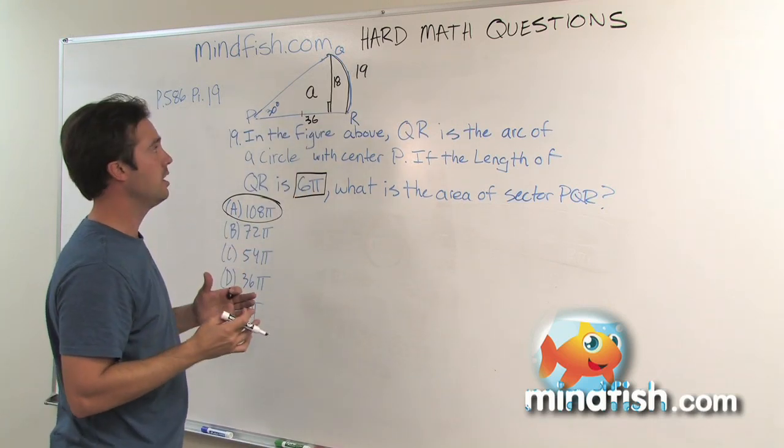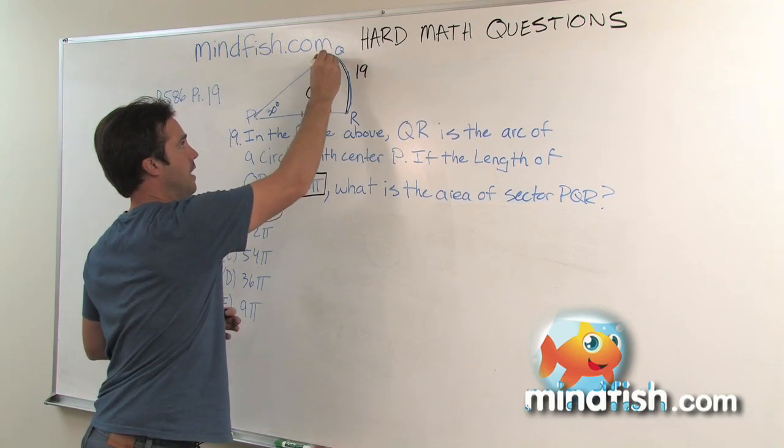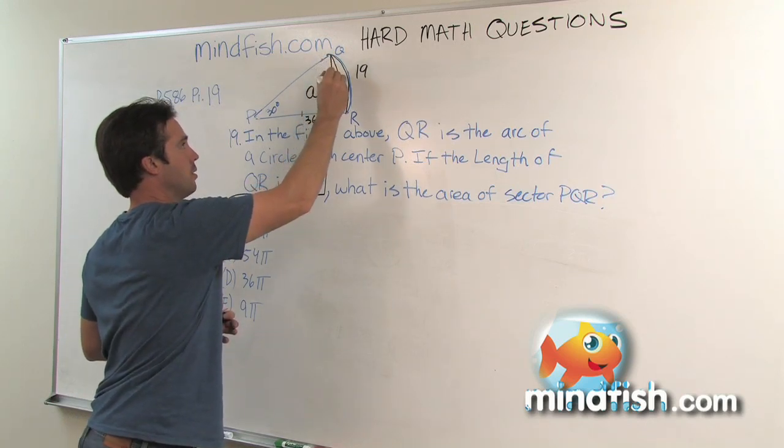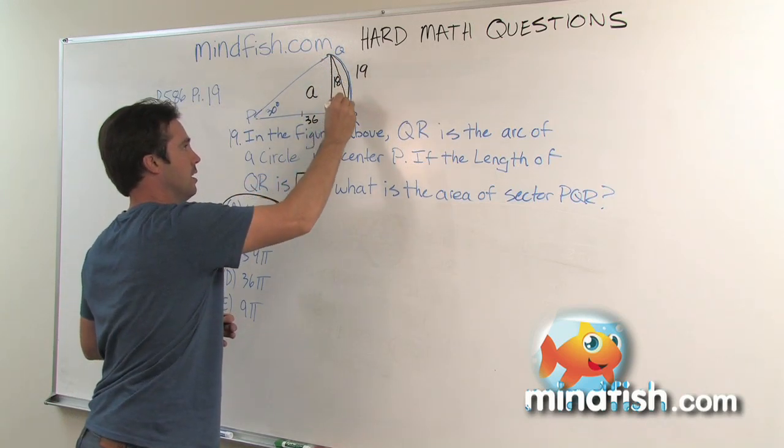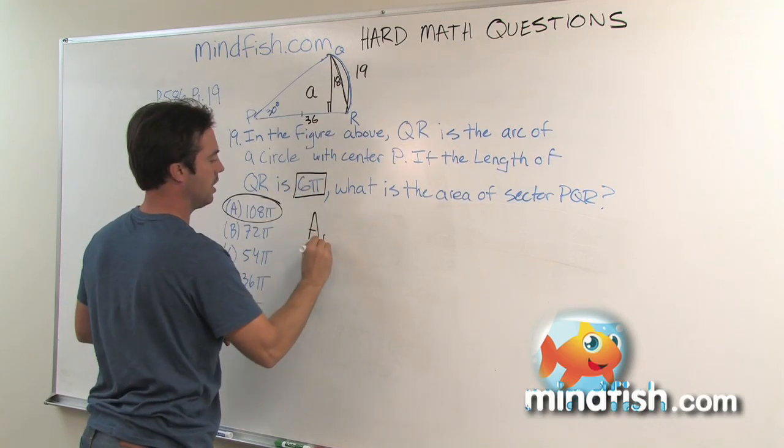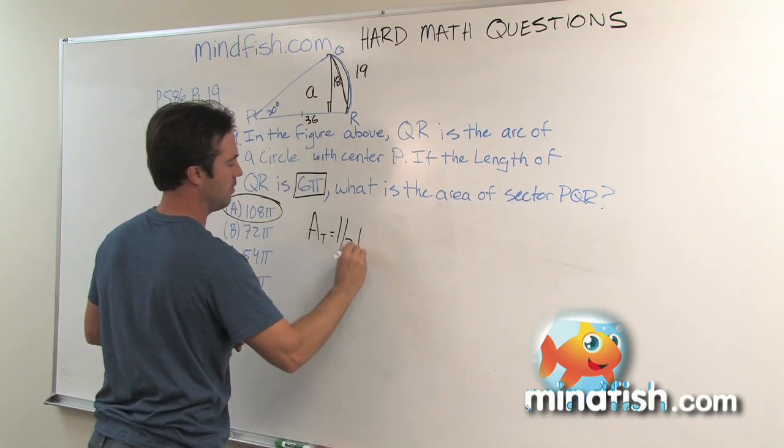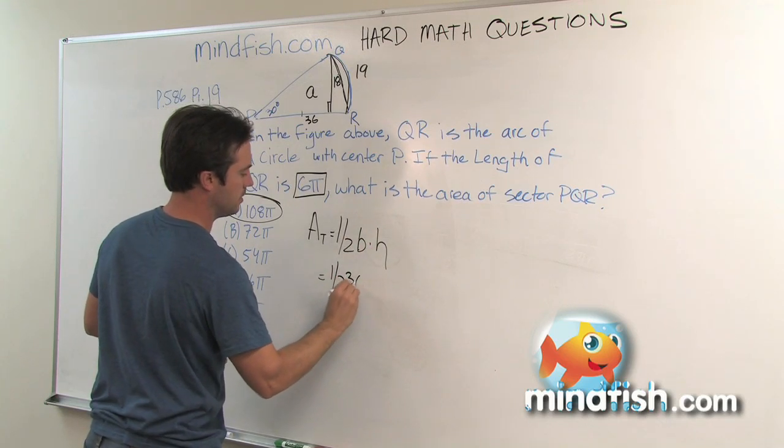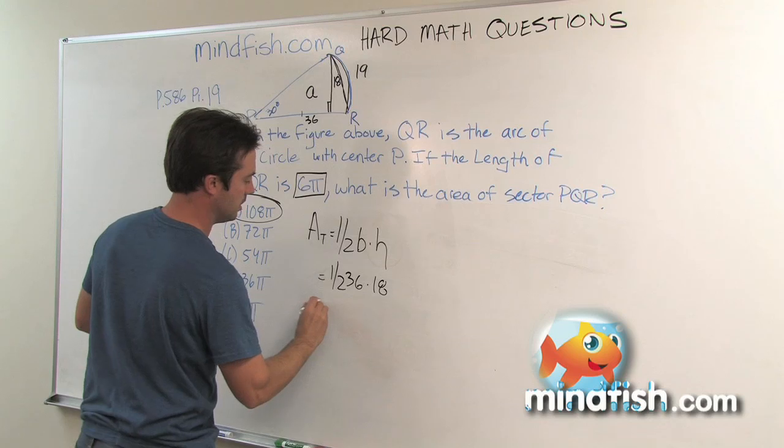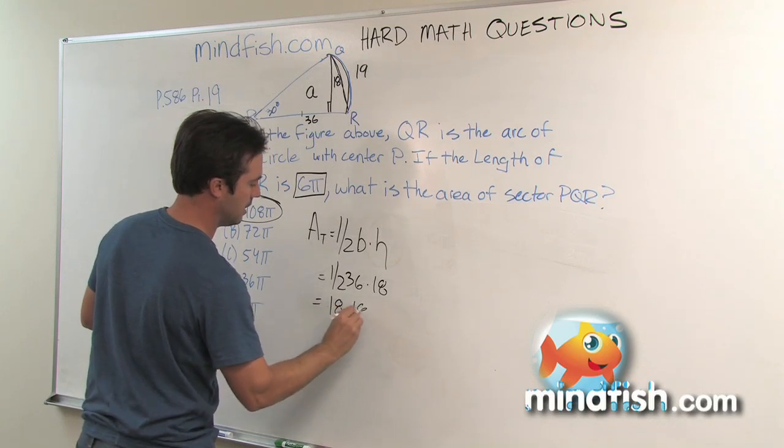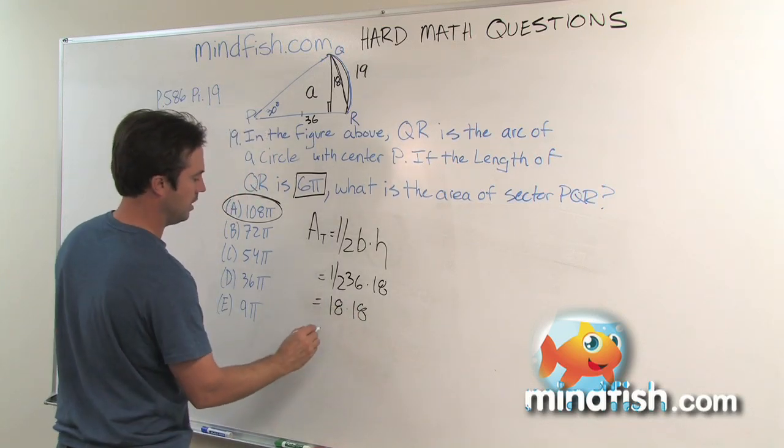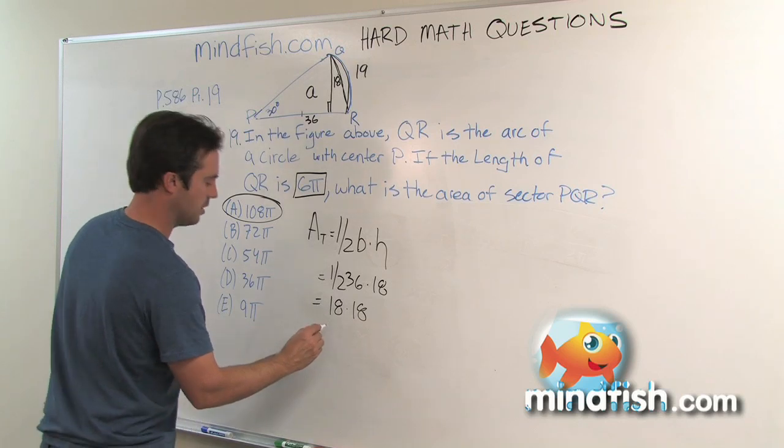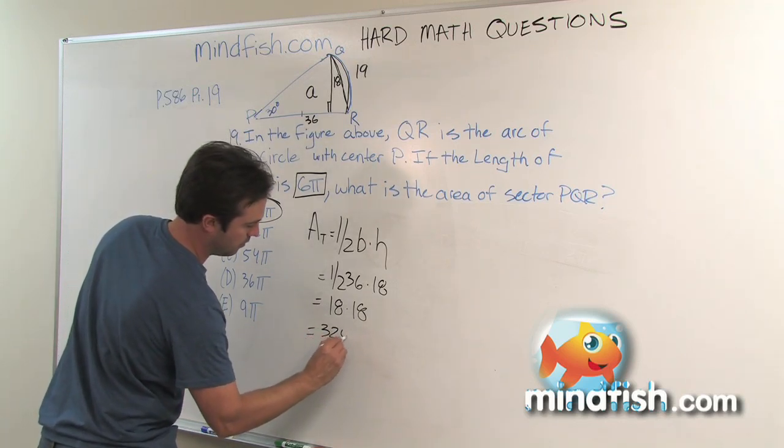What is the area of a triangle? Essentially what we're doing is we're approximating the area to be the area of a triangle. The area of a triangle is 1/2 base times height, which in this case would be 1/2 times 36 times 18. In this case would be 18 times 18, which would be 180 plus 80 plus 64, which would be 324.